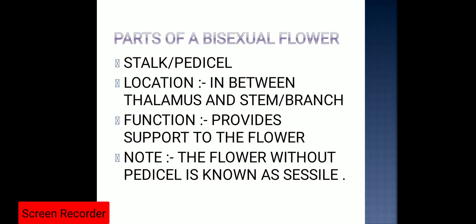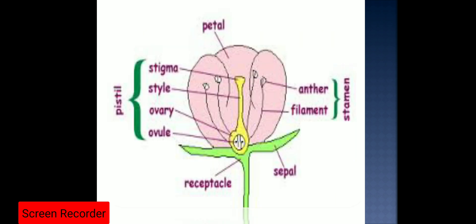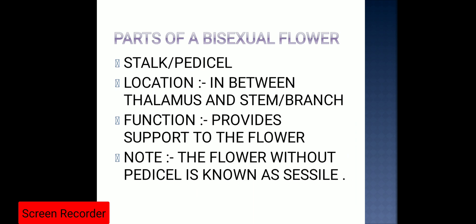Now let's start with the structure, location, and function of the bisexual flower. 'Bi' means two, so when both the reproductive whorls are present, such a flower is known as a bisexual flower, or hermaphrodite flower, or complete flower. So bisexual flower, hermaphrodite flower, and complete flower — don't get confused by these terms.